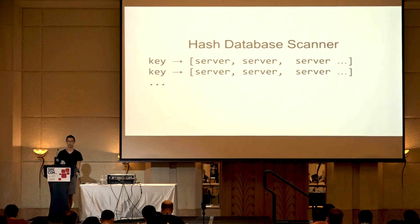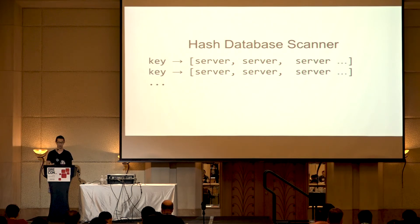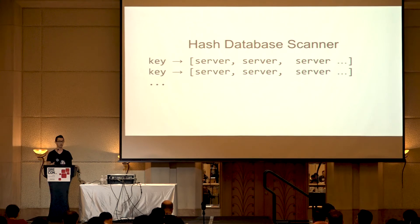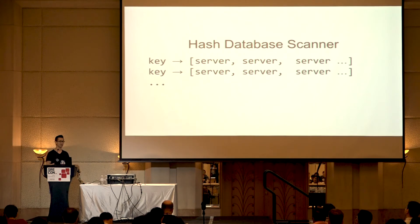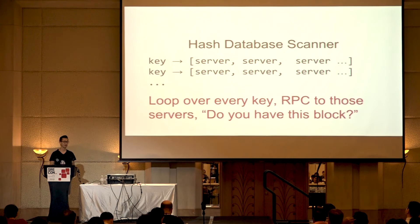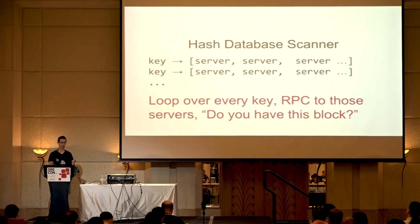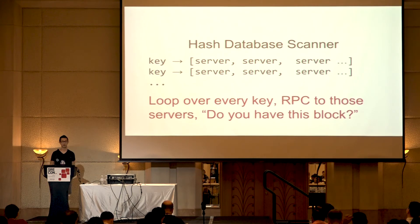Here's another one within block storage. We have one sharded database that describes, for every block of data, which servers that block is actually on — it's a list of servers. What we're worried about is that the servers in that list won't actually have the block of data we're looking for. So we loop through every single one of these records and query the servers: 'Do you have this block?' That convinces us that in the future, when a user request does this lookup, the data will be retrievable.